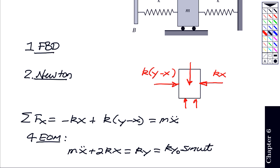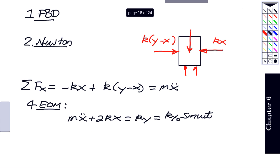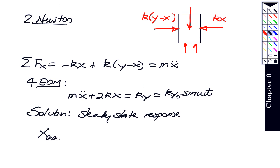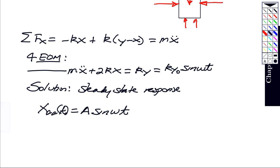The solution, if we're looking for the steady state solution, that is going to be given by some amplitude, which I'll call A, times sine omega t. If I substitute this back into the equation of motion, in other words I combine these two together, I get minus M omega squared plus 2k times A sine omega t. On the right-hand side, I have k y naught sine omega t.